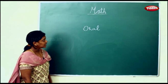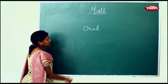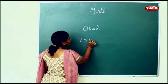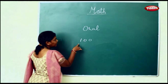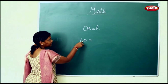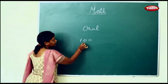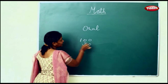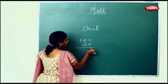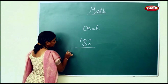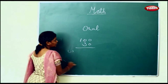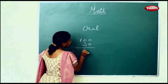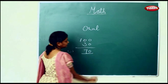Now 30 ladus are issued from 100 ladus. We put 100 on top. 30 are issued from 100, so find the remaining. Remaining means you'll have to do a minus. 100 minus 30 will be 70.